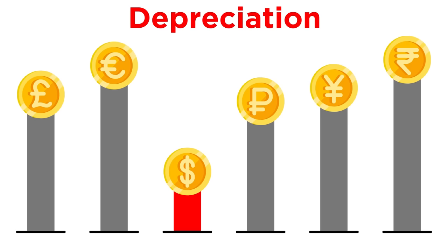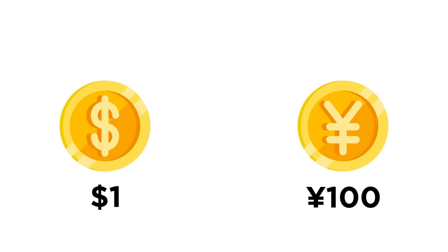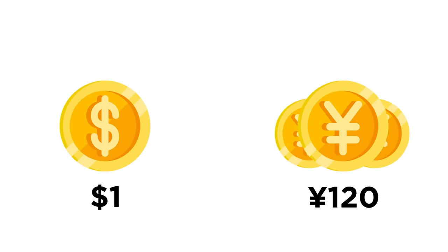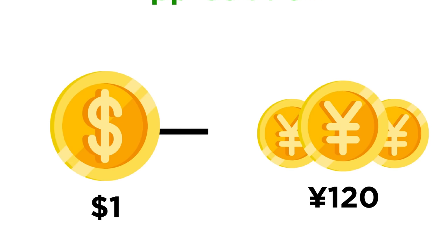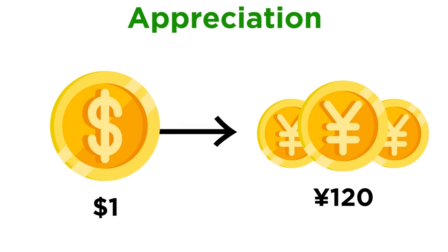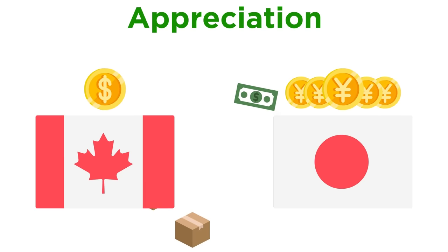If the exchange rate between the Canadian dollar and the Japanese yen increases from 100 yen per dollar to 120 yen per dollar, each dollar can buy more yen. Because the dollar has increased in value, it has appreciated against the yen. This appreciation means that people in Japan will have to spend more yen to purchase a dollar's worth of goods from Canada.